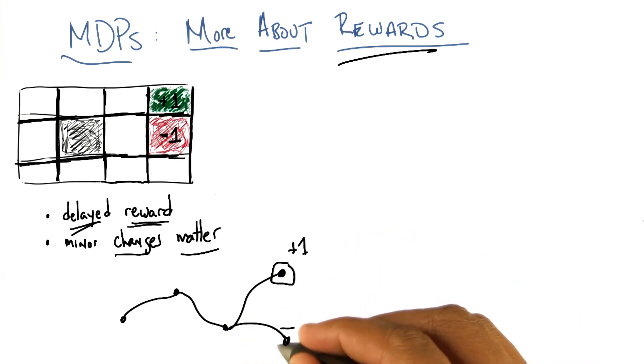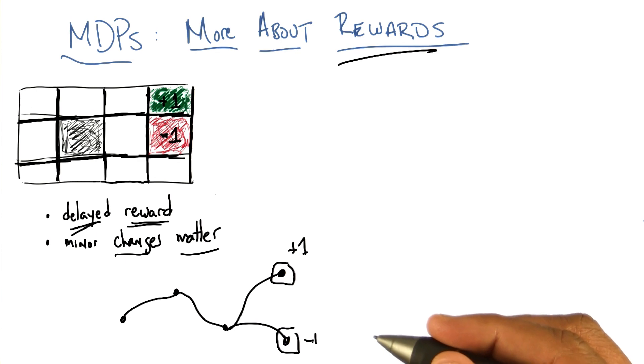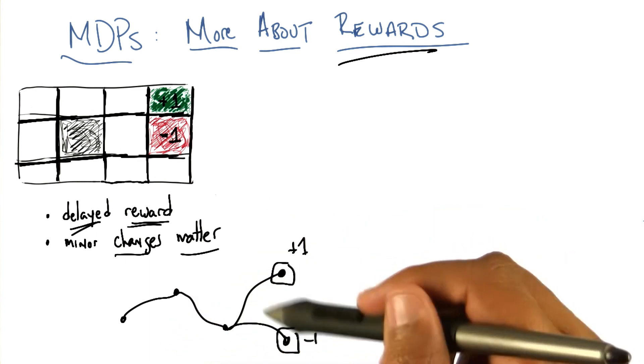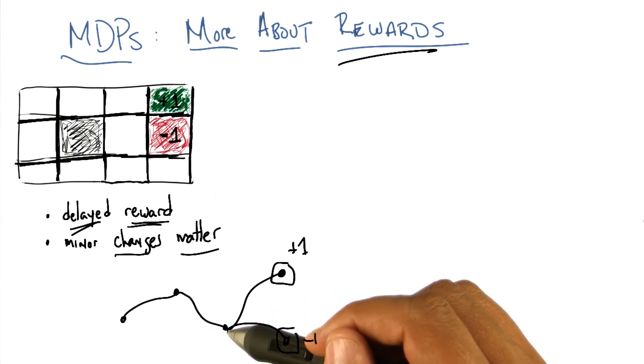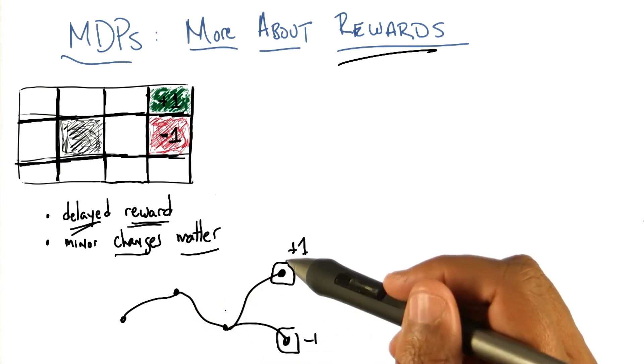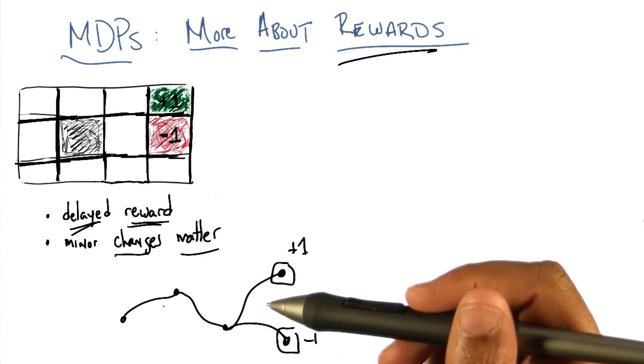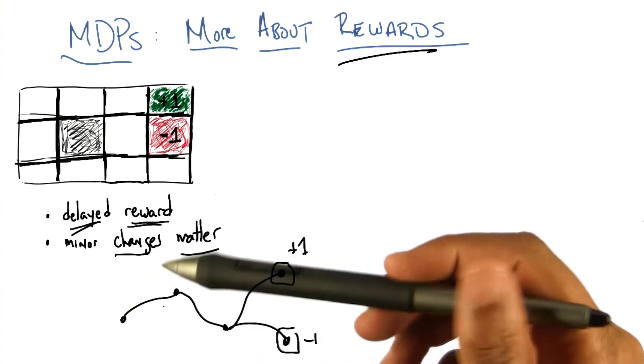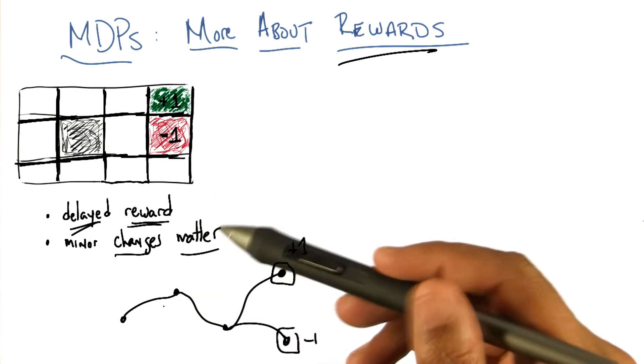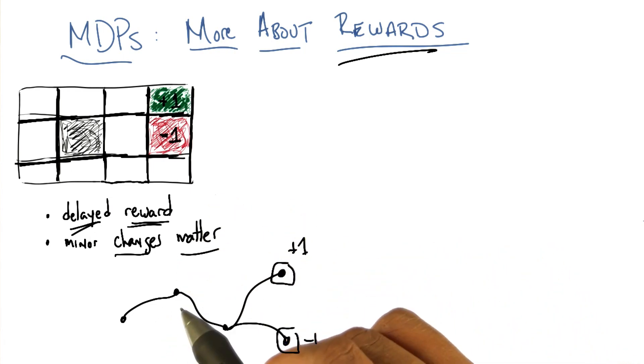Or maybe it puts you in a place where you get minus one. And what really is going on here is this idea that you take actions that will set you up for other actions, that will set you up for other actions, and only then do you know how good those particular actions you took were. So this reward is not just an idea of getting a reward at every state, it's an idea of getting delayed reward. So you don't know how your immediate action is going to lead to things down the road.